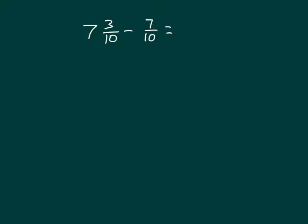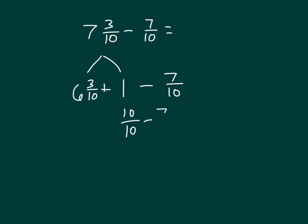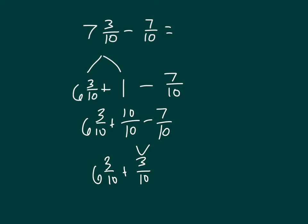Let's look at one more: 7 and 3/10ths minus 7/10ths. We'll break it apart — 7 and 3/10ths decomposes into 6 and 3/10ths, plus 1. Then we work out 1 minus 7/10ths: 10/10ths minus 7/10ths equals 3/10ths. So we have 6 and 3/10ths plus 3/10ths, which equals 6 and 6/10ths, which simplifies to 6 and 3/5ths.